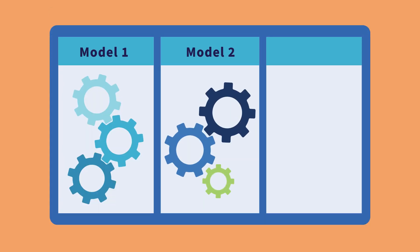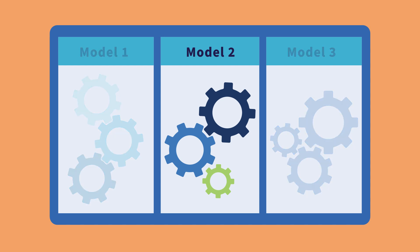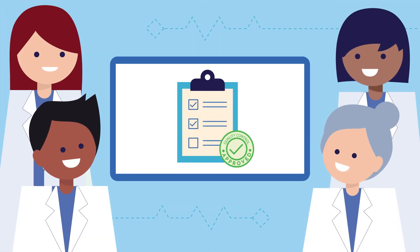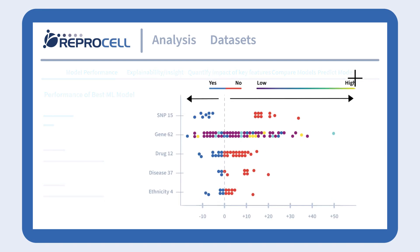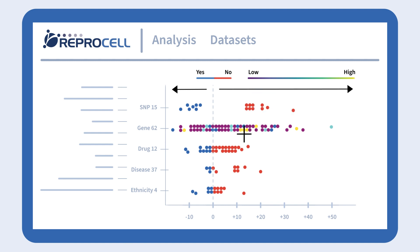The system trains and tests multiple machine learning algorithms on your data set before automatically selecting the best-performing algorithm for your analysis. Importantly, key quality control parameters are also reported to ensure that you have confidence in the outputs. Pharmacology AI's unique user interface provides the actionable insights you need to develop and test novel patient stratification strategies.